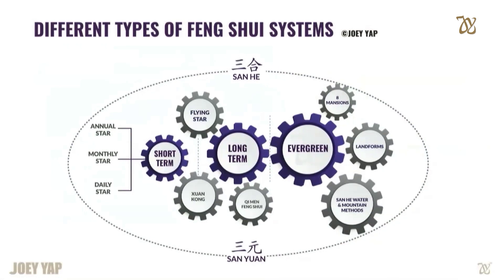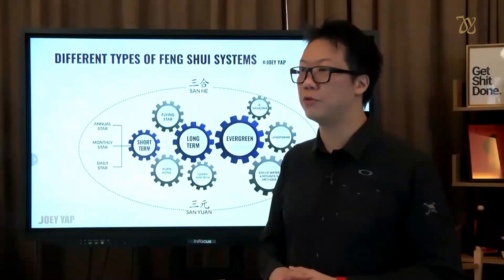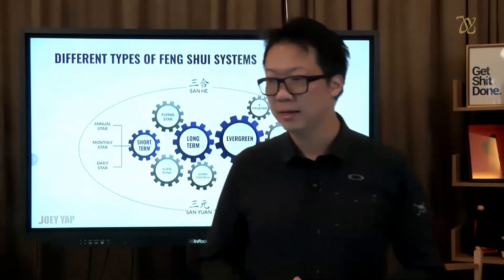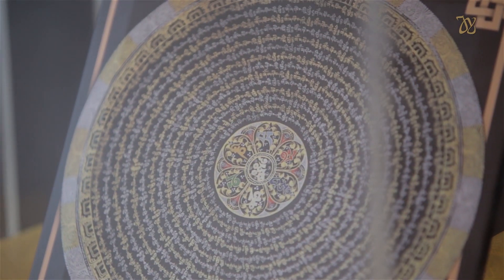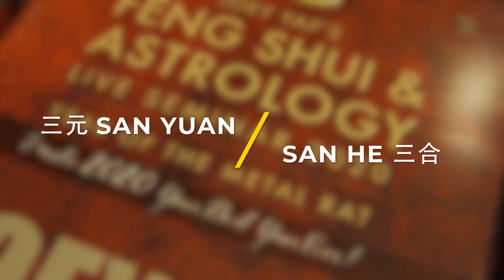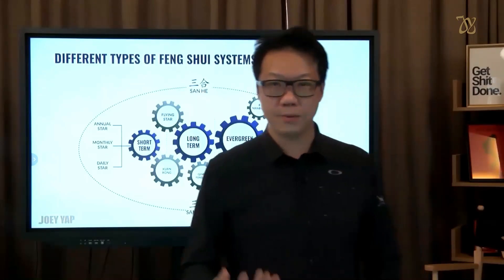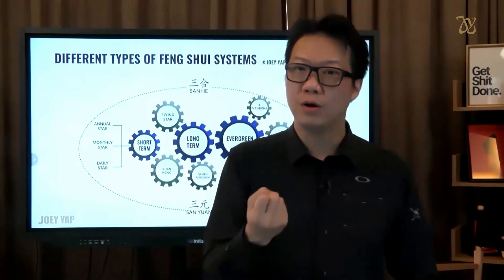So this chart here is just an explanation — you've seen it before in the basic program. I'm just showing the different systems of feng shui based on its application model. So there are so many systems of feng shui, primarily the San Yuan and San He schools of feng shui. As you can see, San Yuan and San He are highlighted — they actually belong to the same category, the same group of system.